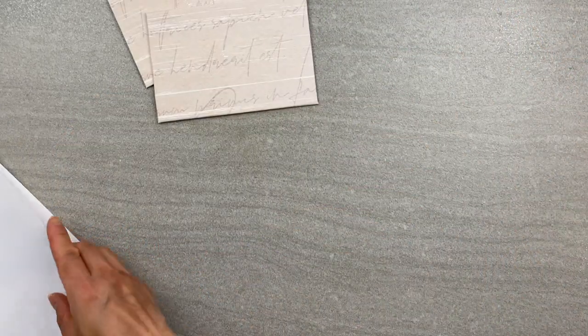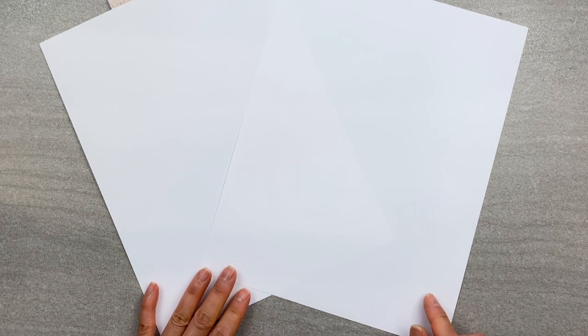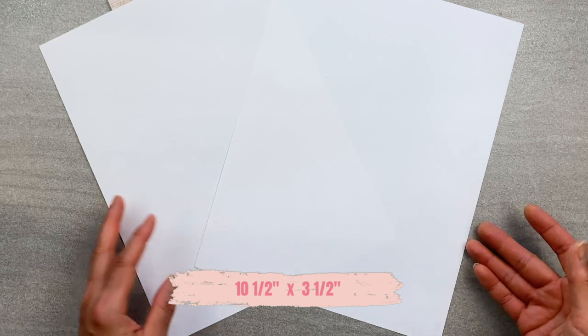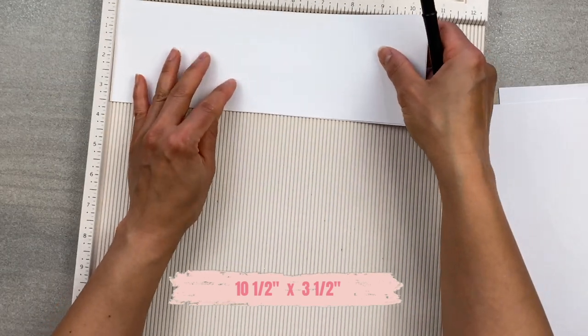Okay, now that's done, let's put the rest of this journal together. Take the two pieces of white cardstock and cut four separate strips of paper that are ten and a half by three and a half inches, then score them at five and a quarter of an inch.